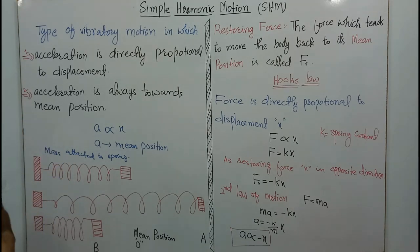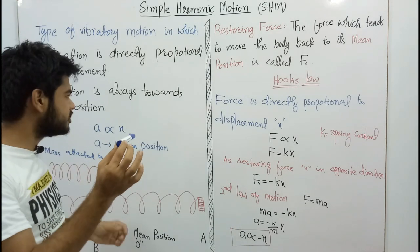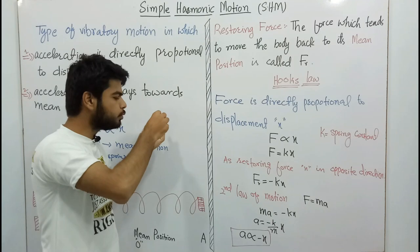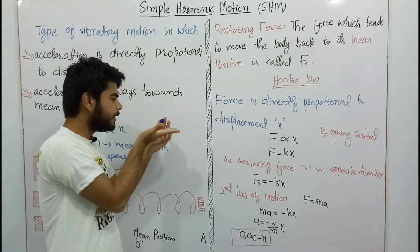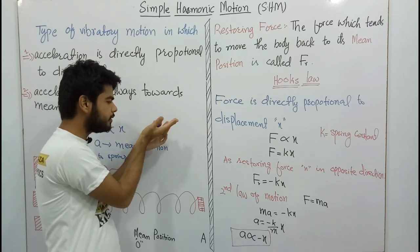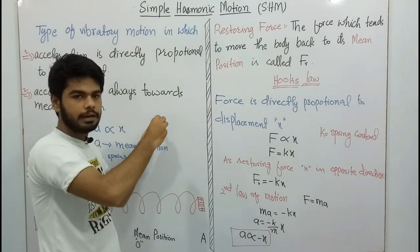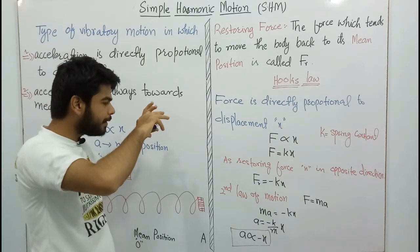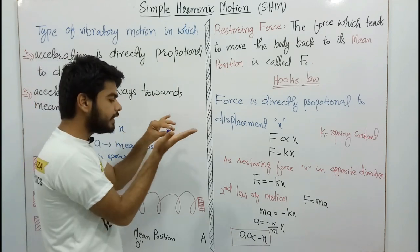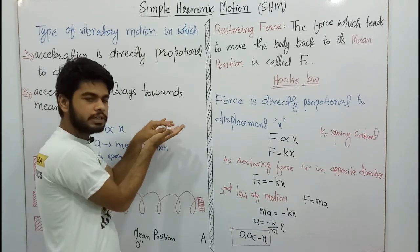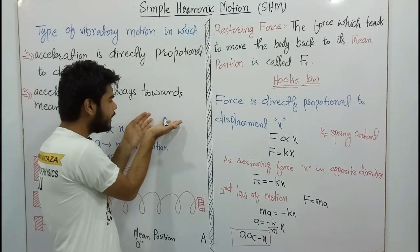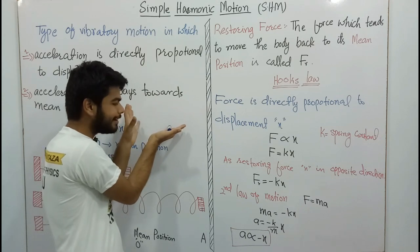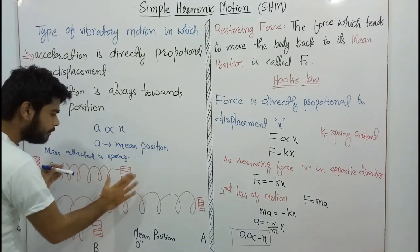Now let's take an example of this: mass attached to a spring. Suppose I have a spring, here I have a hook, and the other end is free. I have a frictionless surface. Now I have a mass attached to the other side. I have a mass, and I have set it at the equilibrium position.